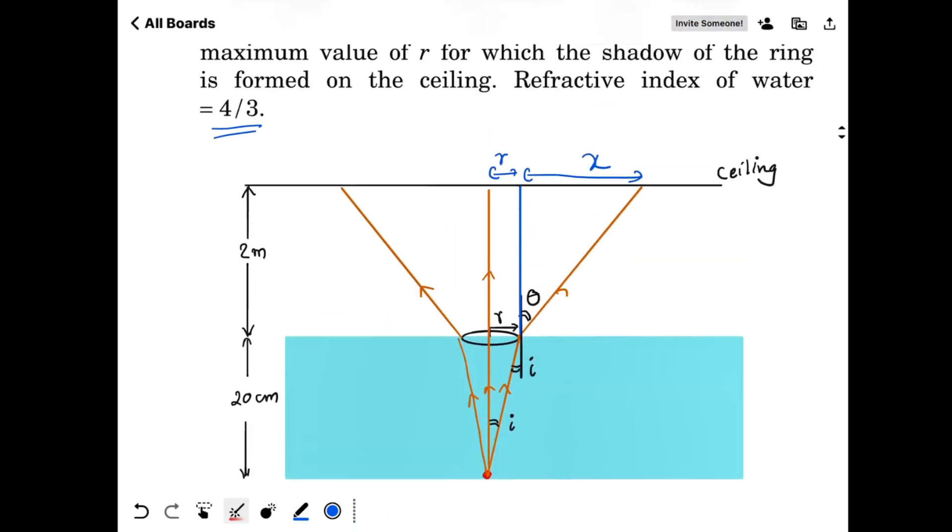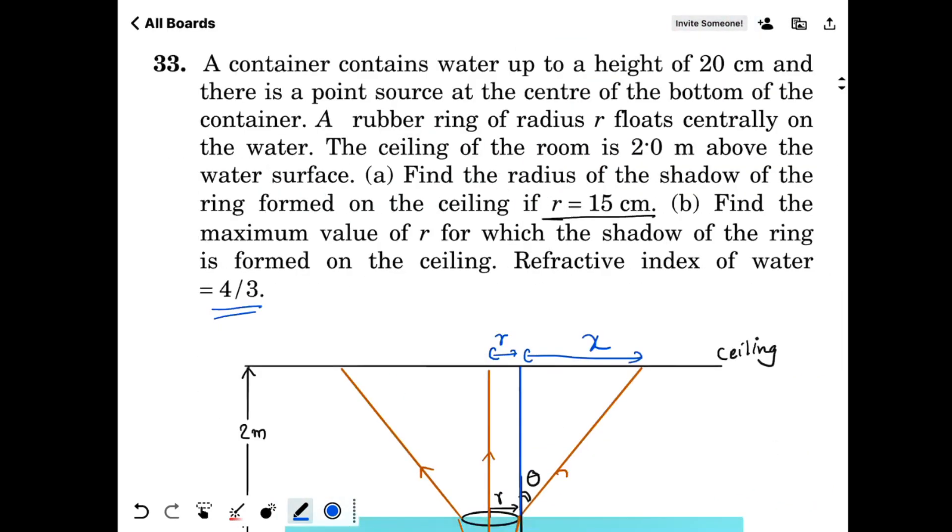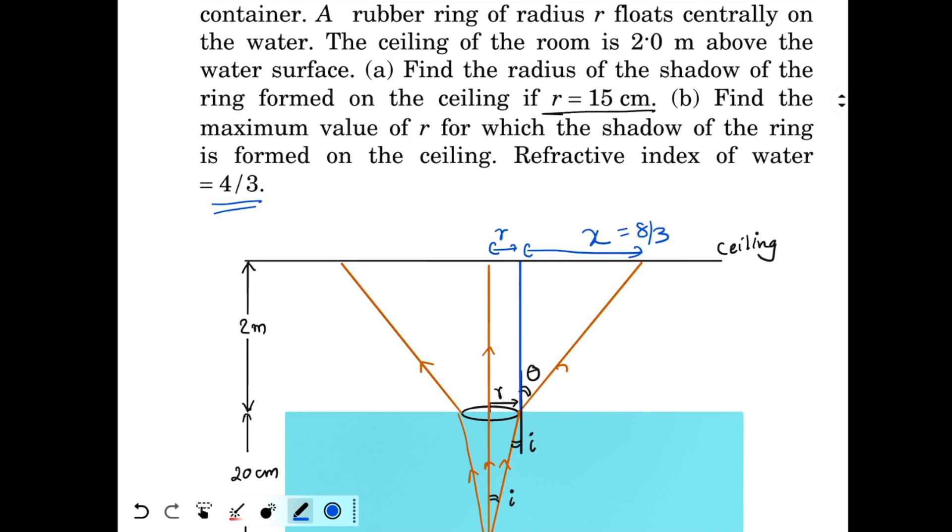So that's it. x equals 8 by 3. And r is 15 centimeters or 15 by 100 meters, 3 by 20 meters. So just add them together to find the total radius. So total radius of shadow will be r plus x. So this is equal to 3 by 20 plus 8 by 3. And this is equal to, so this is 60 in the denominator. In the numerator we have 169. So in meters, this is the radius of the shadow of the ring.